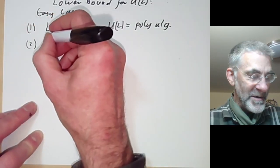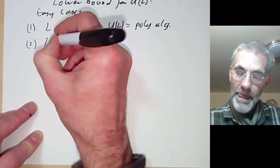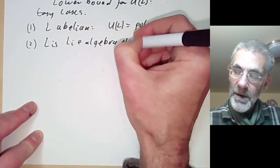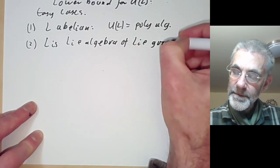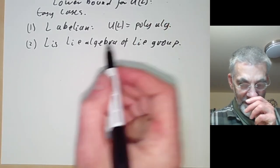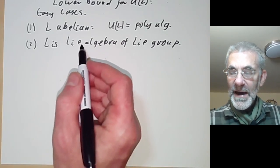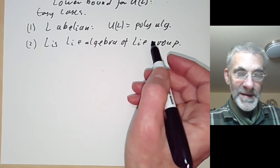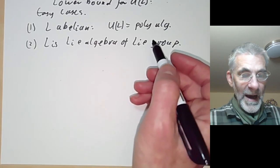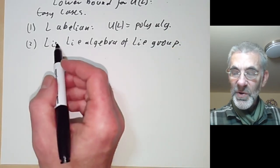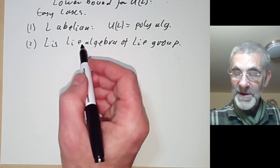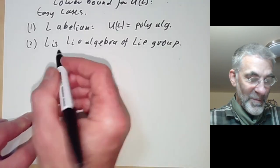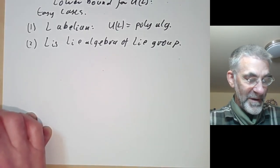Another fairly easy case is when L is the Lie algebra of a finite-dimensional Lie group. In fact, any finite-dimensional Lie algebra is the Lie algebra of a Lie group, so this covers all cases in some sense. However, it's quite tricky to prove that all finite-dimensional Lie algebras are Lie algebras of Lie groups. But if we can establish this, we can prove the PBW theorem as follows: we pick local coordinates.